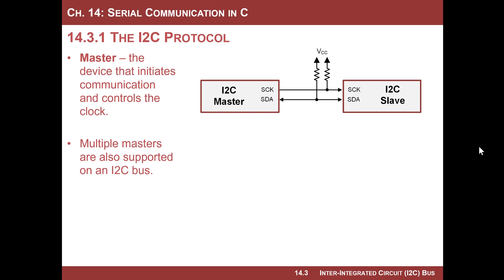Slaves tend to be things like sensors and data loggers — devices that run independently. The master goes out and polls them for information. That's the general use model. You can absolutely have multiple masters, but this is a half-duplex link, so you cannot have multiple masters driving at the same time. For our study, we say we're going to have a master, and it's going to be the one that initiates the message.